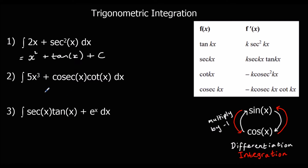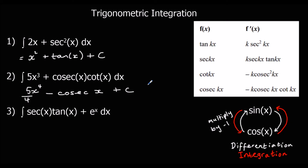Question 2: 5x³ — add 1 to the power and divide by the new power — giving 5x⁴ over 4. We've got cosec x cot x, which integrates to give negative cosec x plus c. And sec x tan x integrates to give sec x. Then e to the power of x: when we differentiate e^x it stays itself, so when we integrate it also stays itself, giving plus e^x plus c.